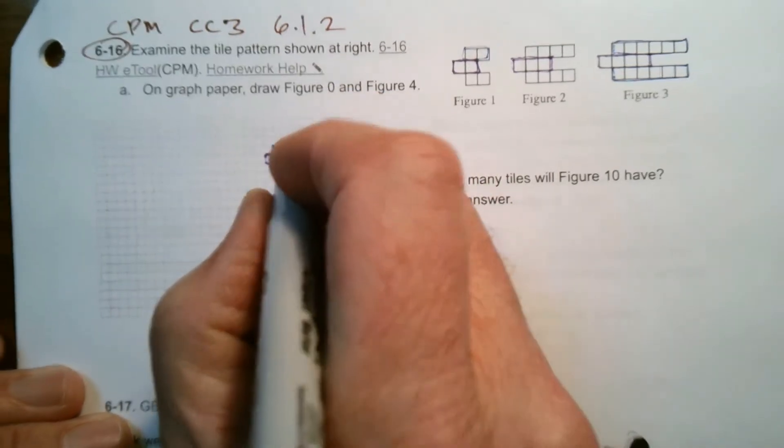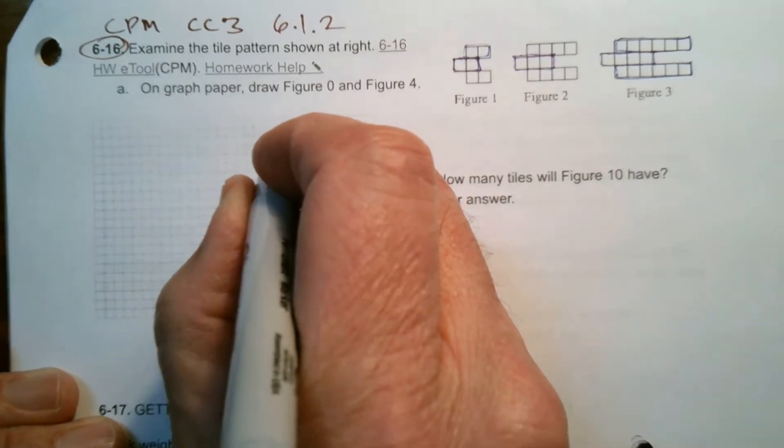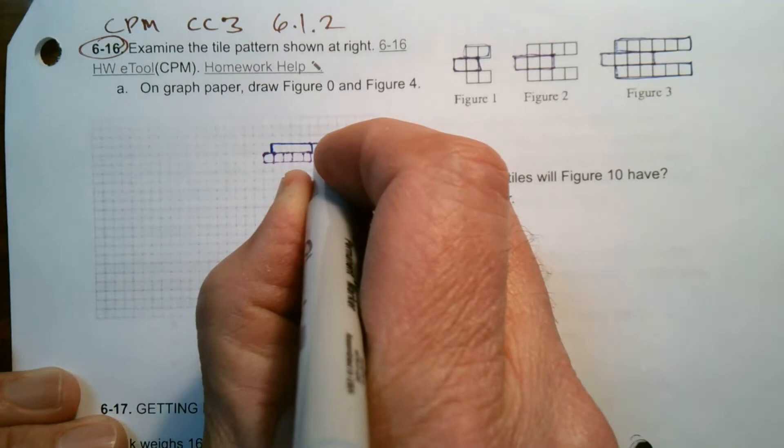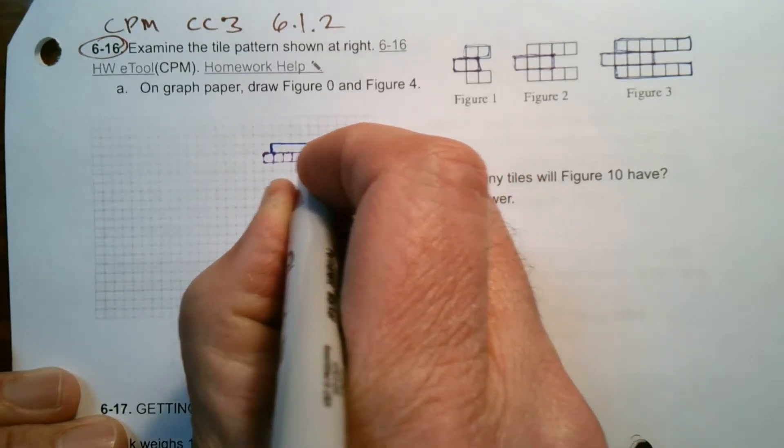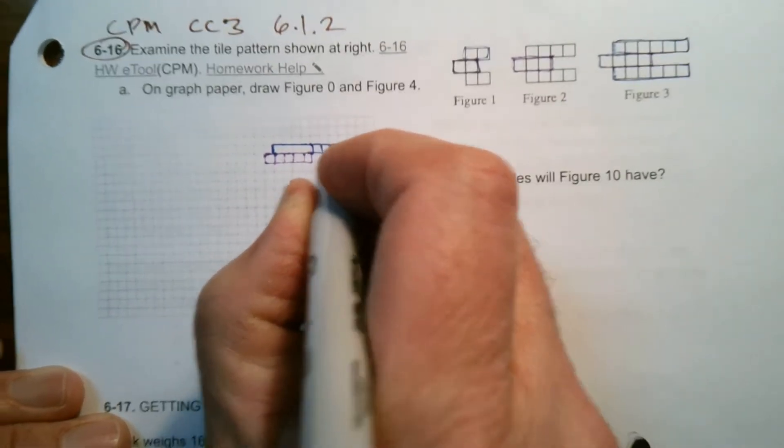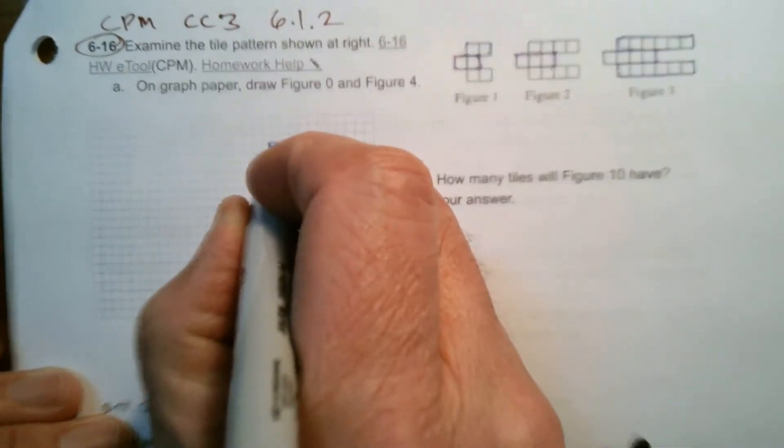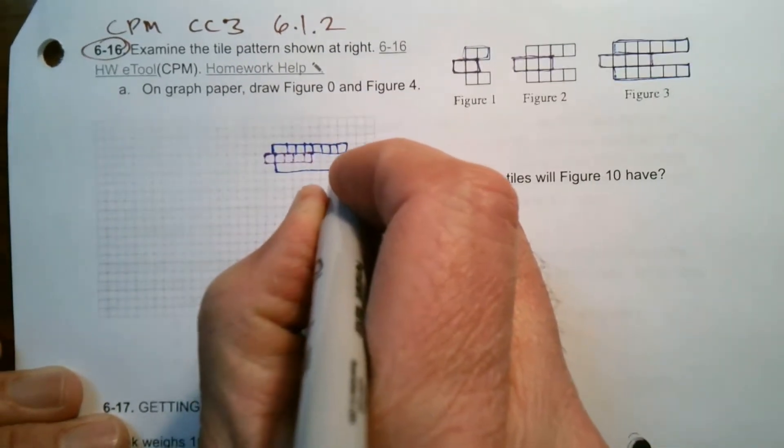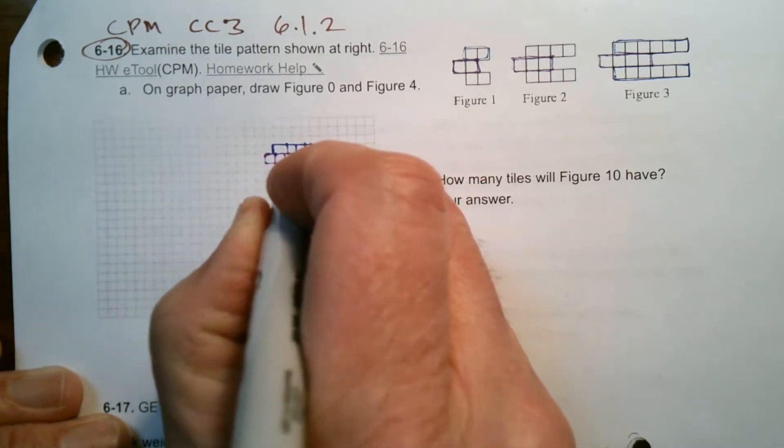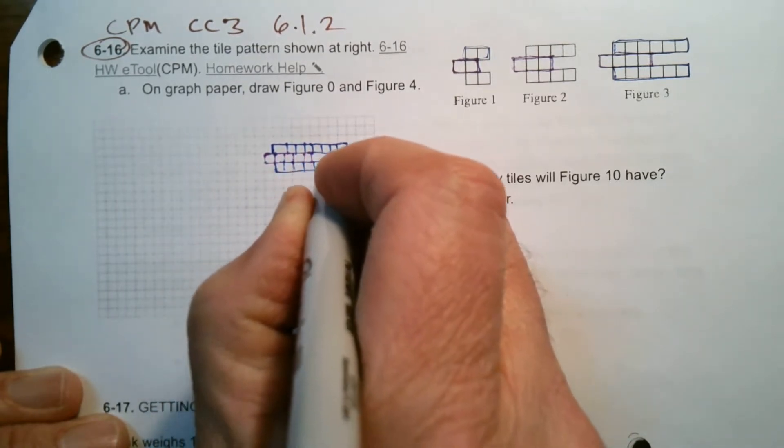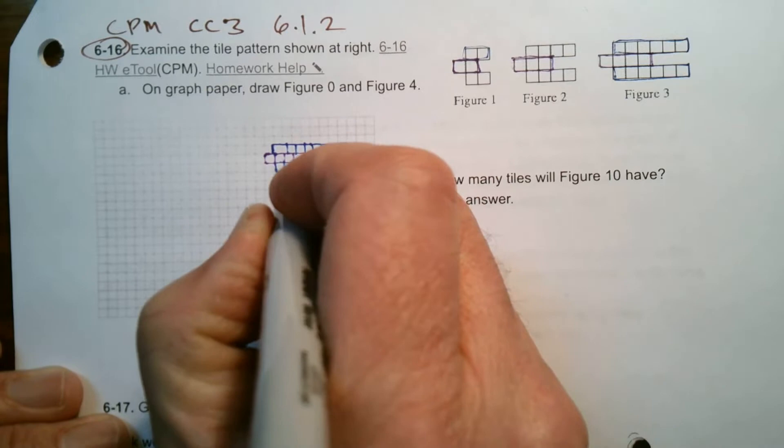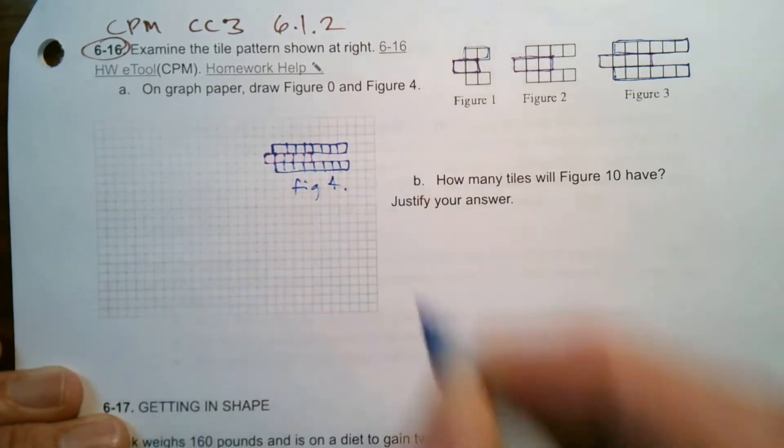So Figure 4 then should be 8 and 8. So I should have 8 of these squares - there's 4, 8. So there's 8 of these squares in the top and bottom for Figure 4. This is what Figure 4 would look like.